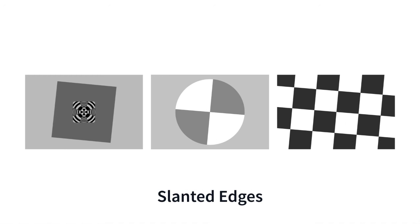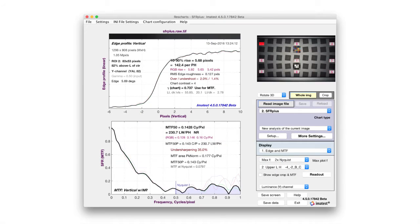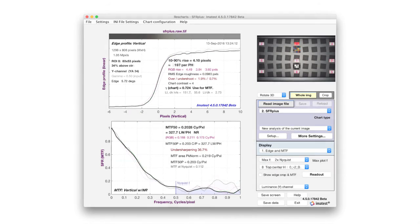The most efficient way to measure sharpness is with slanted edges. They enable quick and accurate measurements at many precise locations in an image.